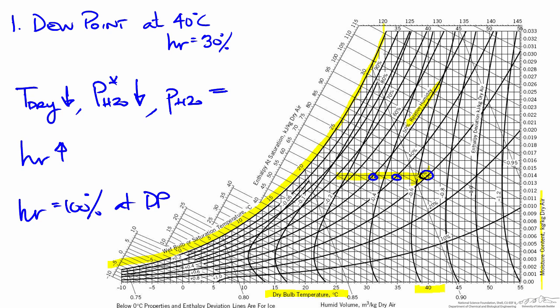Continuing left all the way to the 100% saturation curve, we find the dew point. The temperature can be found along the saturation curve. Here is 20 degrees — we are a little bit less than that, so we are slightly over 19 degrees. We can also confirm this by dropping straight down to the x-axis, and again we can see that our temperature is slightly over 19. So in this case our dew point is about 19 degrees.